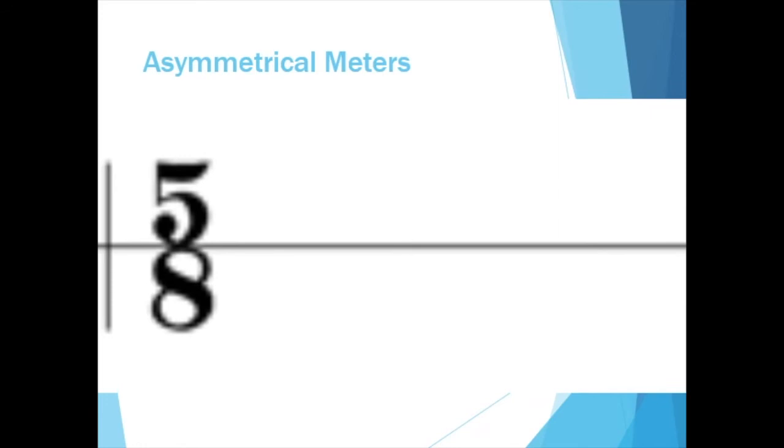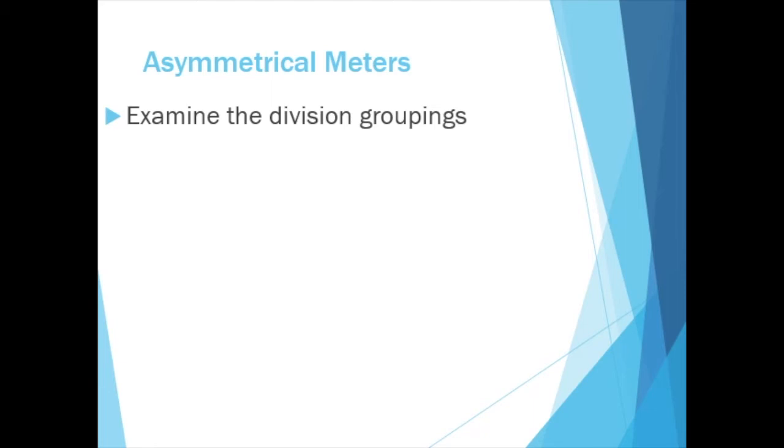When examining a piece of music in an asymmetrical meter, it is important to decipher how the meter's divisions are grouped in order to figure out where the beats lie. For example, the 5 eighth notes in 5-8 are often grouped in either a 2-plus-3 pattern or a 3-plus-2 pattern.